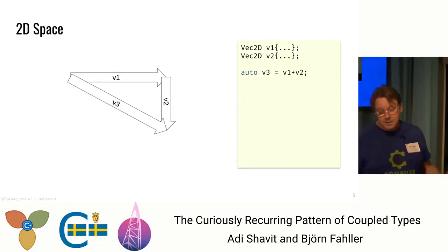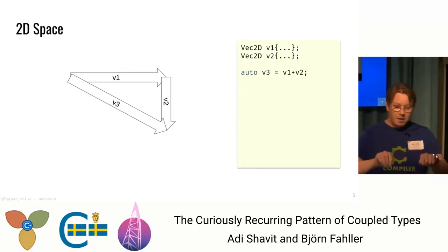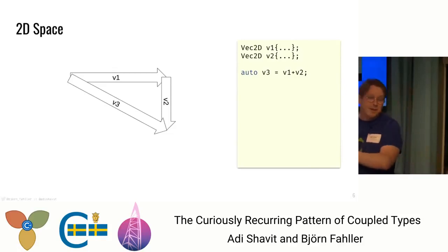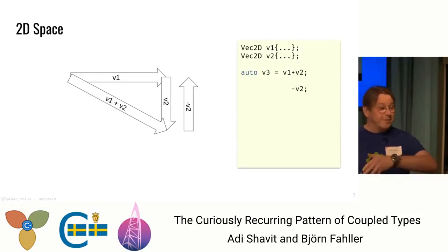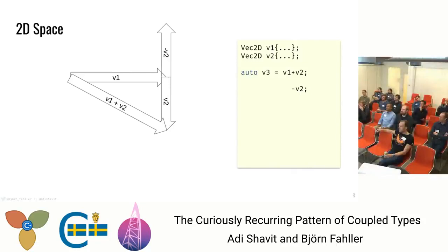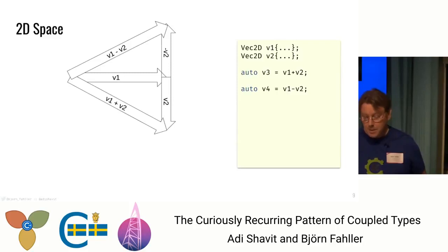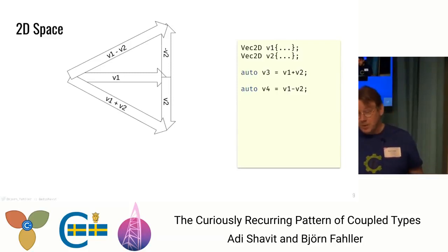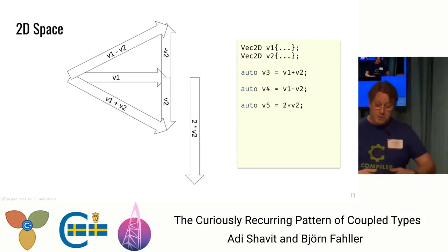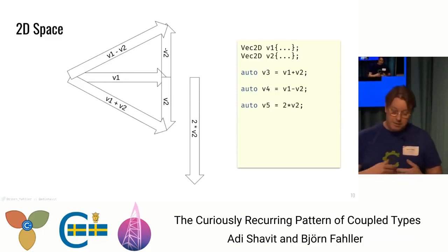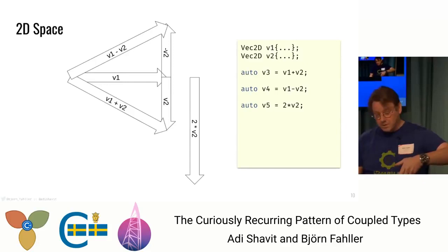We can add vectors. V3 here is the sum of V1 and V2 by just sliding the vectors so that you concatenate them, then you get the resulting vector. Subtracting a vector is just reversing its direction. So V1 minus V2 is just sliding the reversed vector and getting the sum. I presume no one is very surprised over this.